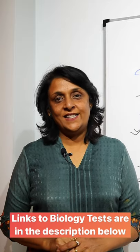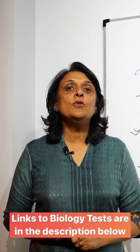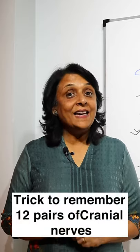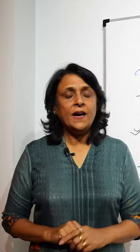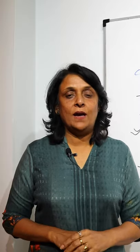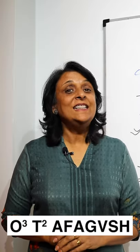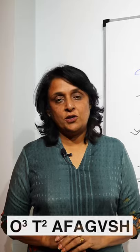Welcome to Quick 60. I'm going to tell you how to remember the 12 cranial nerves in the correct order with a simple formula: O Q T square ephagos.